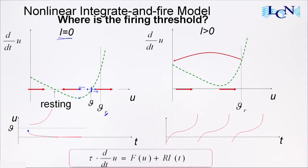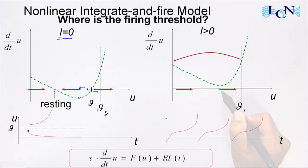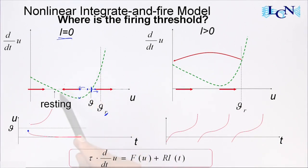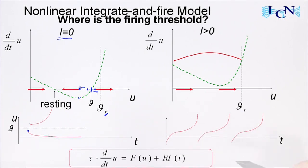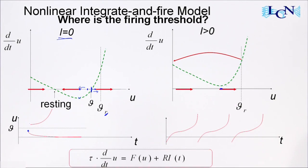The question now is: at which point will the neuron enter the regime of repetitive firing? It will enter repetitive firing as soon as no fixed point remains — as soon as the green curve is above the zero line. As we increase the current from zero to some positive value, the green curve shifts up. Initially I have two fixed points; as I shift the curve up, they move together, merge, and then disappear. This is the moment when repetitive firing starts.